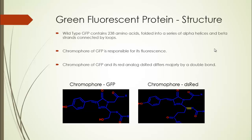The chromophore of GFP is responsible for its fluorescence. The chromophore of GFP and its red analog DS Red differ majorly by a double bond. You can see the structure here, where the double bond is marked in yellow — that is the key difference between the GFP chromophore and the chromophore of DS Red.